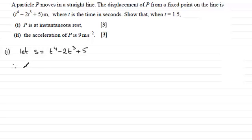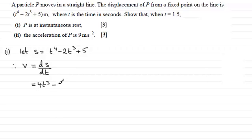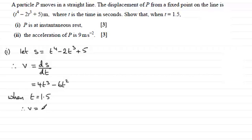The velocity v is given by the rate of change of displacement s with respect to time. Differentiating with respect to time gives 4t cubed, and then for the second term minus 6t squared. Differentiating the constant gives 0. So when t equals 1.5, v equals 4 times 1.5 cubed minus 6 times 1.5 squared, and if you work this out it comes to 0.